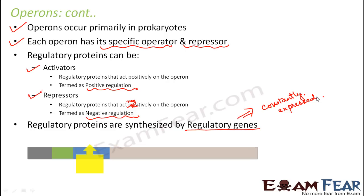Regulatory genes produce RNA which produces regulatory proteins, and those regulatory proteins are produced continuously. Their job is to control gene expression — sometimes attaching to the operator to turn the gene off, or attaching to turn the gene on. The first operon completely described was the lac operon in E. coli. Once we discuss lac operon, you will get an idea about how all operons work.